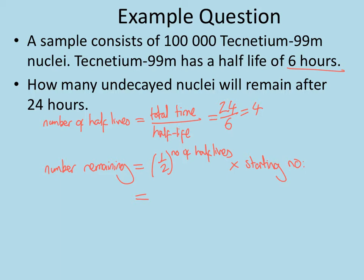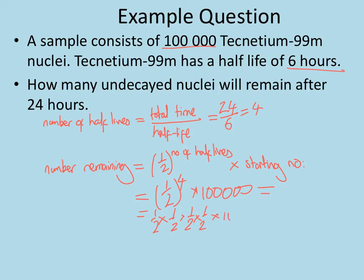Four half-lives have passed, so to find out how many of our 100,000 nuclei remain, we do a half to the power four times 100,000. Or alternatively, a half times a half times a half times a half, four times, multiplied by 100,000. Either way, that gives us 6,250 nuclei remaining.